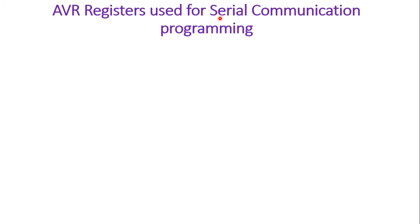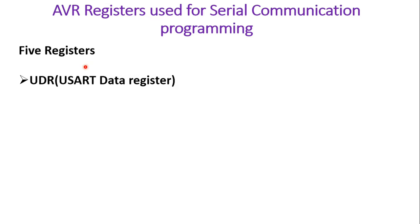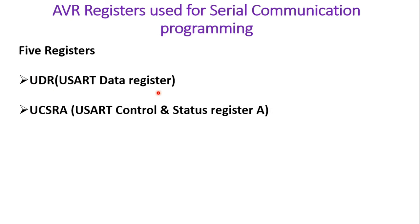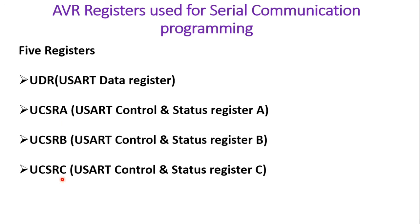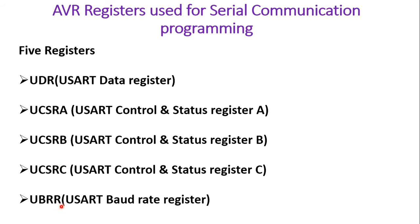Let us begin with AVR registers used for serial programming. There are five registers in AVR which will be needed for serial communication programming. First one is the UDR register, which is called the user data register. Then UCSRA, UCSRB, and UCSRC registers — these three are control registers which will control the entire serial communication operation in AVR microcontroller. Then we have the UBRR register, called the user baud rate register, which will be needed to set the serial communication speed.